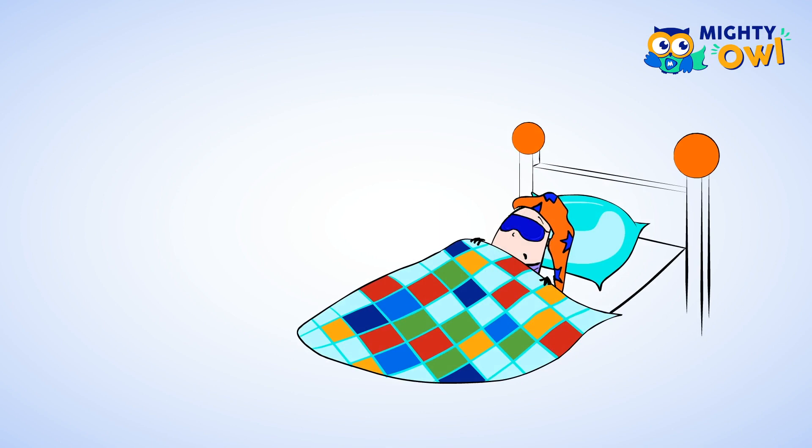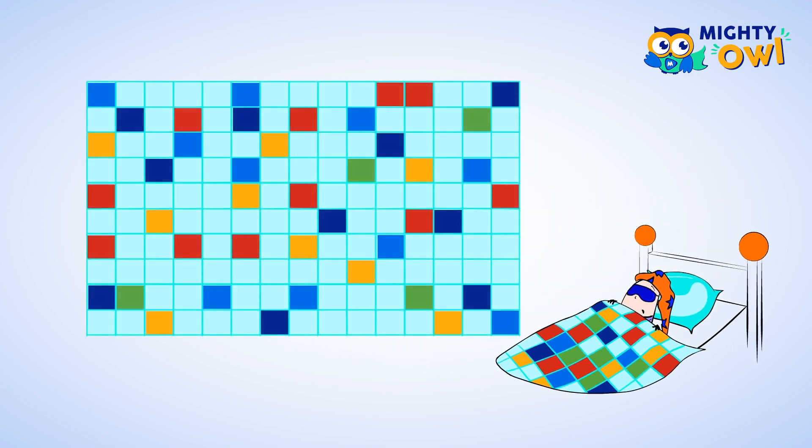Take a look at this great quilt I have. It's super big and takes up a lot of space or area. Each of the squares in this quilt are one foot squared and that means that each square is one foot long by one foot wide.